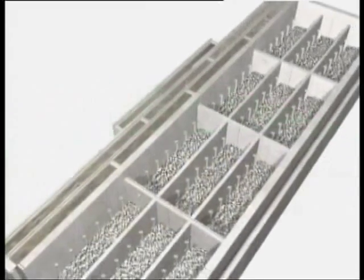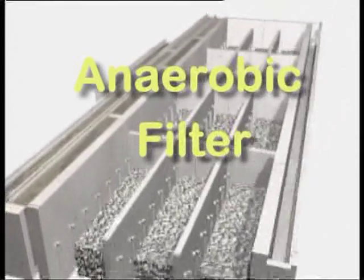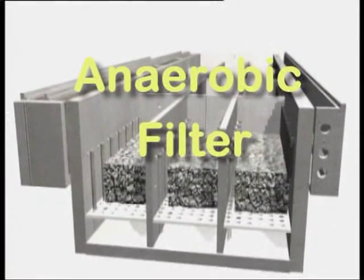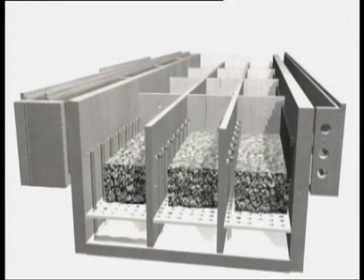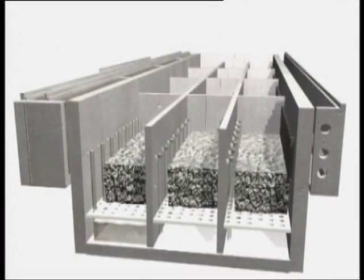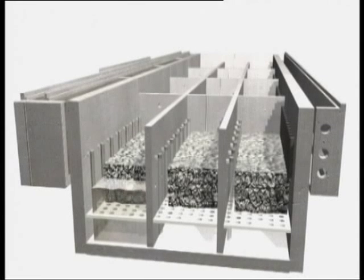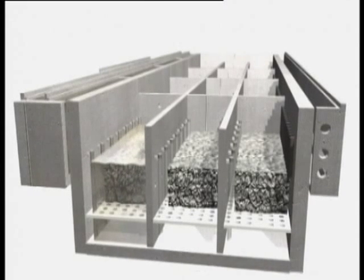The third stage is an anaerobic filter. Here, fermenting bacteria are fixed on filter material to further process the reduction of pollutants up to 90%.